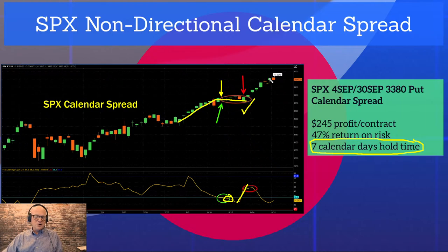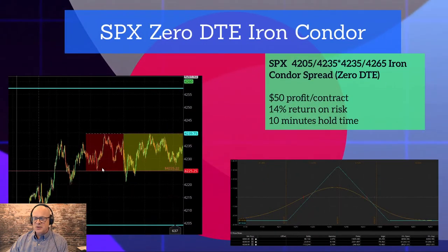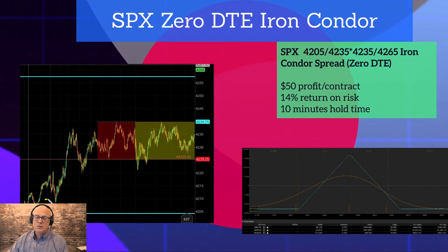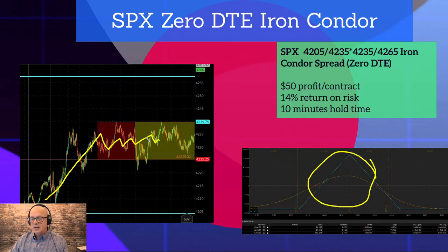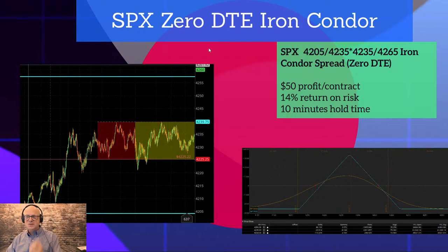If your wife is eight and a half months pregnant, that's serious range contraction — it's about ready to go. Here's another trade showing range, range expansion, range contraction. We played an iron butterfly to catch the range contraction — this was this morning's trade. $50 profit per contract, ten minutes hold time. Get in, get your fair share, and get out. Simple concepts, nothing all that difficult.